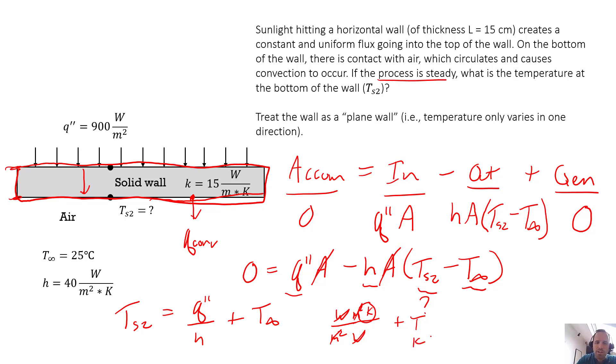Regardless, we end up getting TS2 being equal to, sorry let me erase some stuff to clean this up a little bit. So this is plugging in numbers: 900 over 40 plus our surface temperature is 25. We end up with a temperature of 47.5 degrees C.